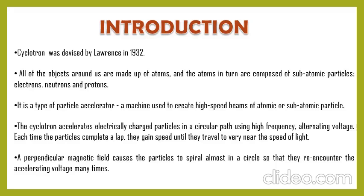We know that ½mv² = qVB. So whenever a particle passes through an electric field once, it gains energy qVB; the next time it passes from the same energy source it gains the same energy again. Whenever the particle re-encounters the alternating voltage many times it gains energy. The main purpose of the magnetic field is to revolve the particle in a circular path, while the electric field energizes the particle at each encounter.